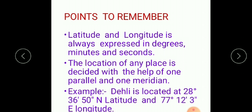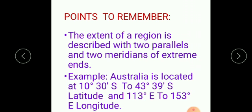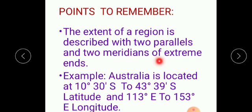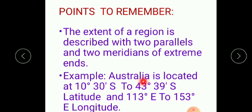To locate any single place on Earth, we use one parallel and one meridian. But if the area is big — the expanse is large — then one parallel and one meridian is not sufficient. For a bigger region, it is always described with two parallels and two meridians of the extreme ends, meaning the starting point and the end point. For example, Australia as a continent has a large area.